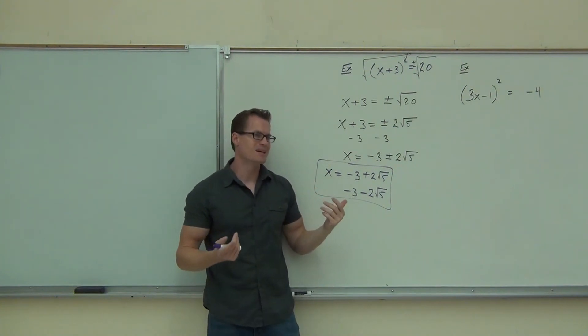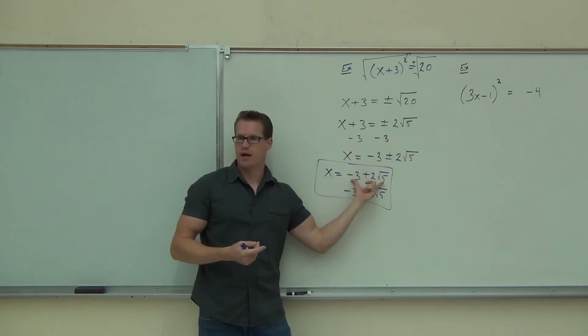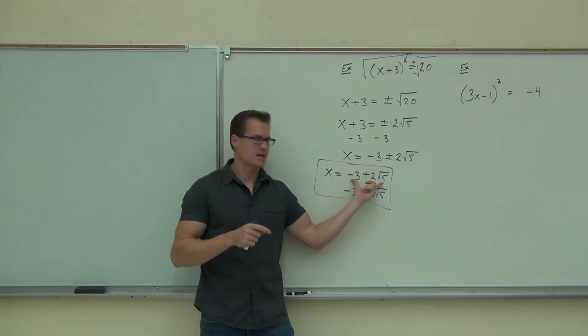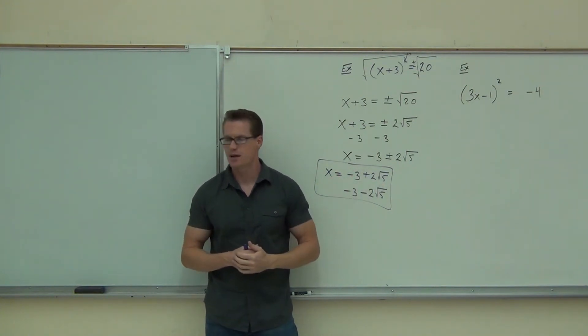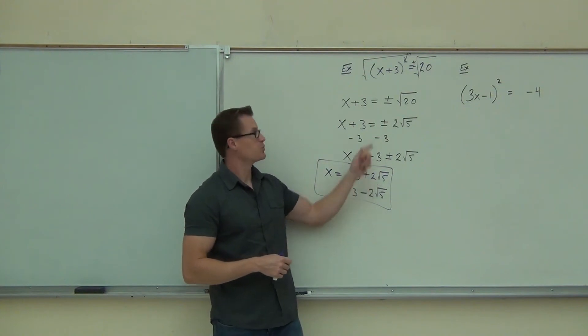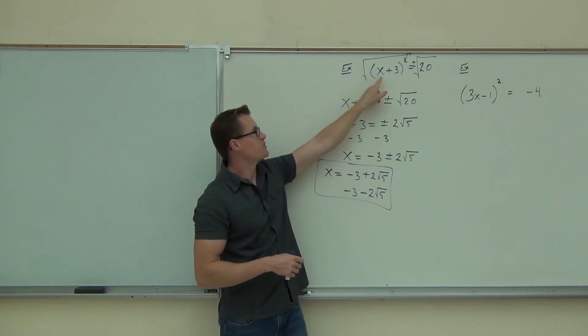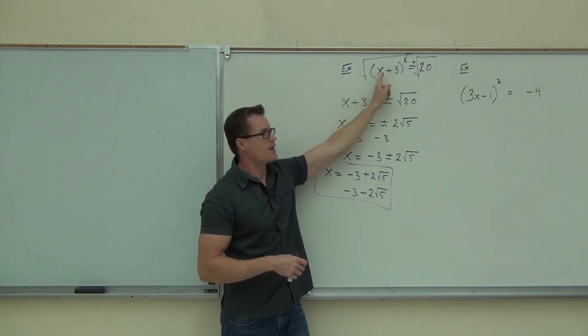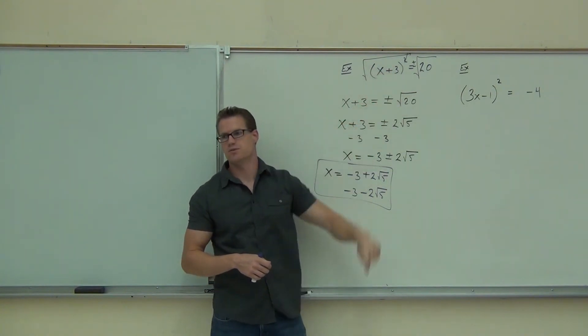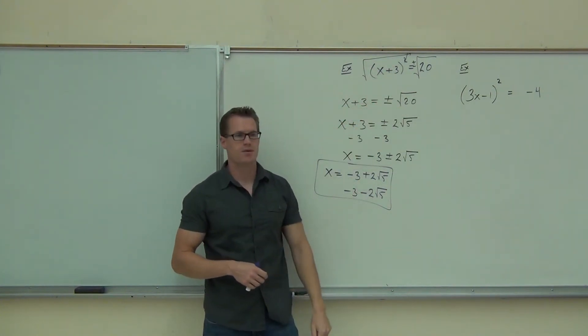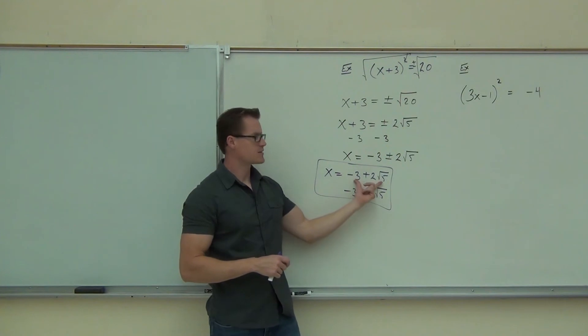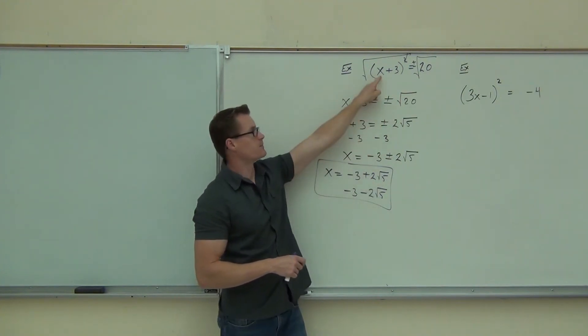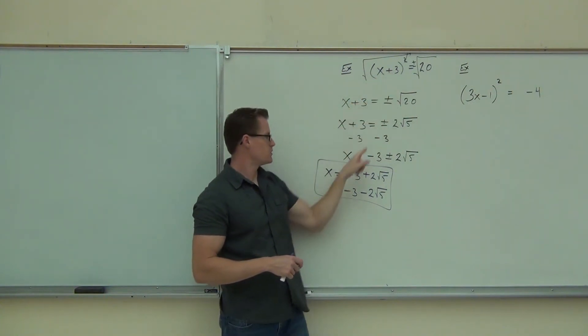Now what's amazing is that this right here, that's a number, right? There's no variable there. That's a number. If you take negative 3 plus 2 times square root of 5 in your calculator, it's going to give you some decimal that doesn't end. If you took that and you plugged it in here, so basically if you added 3 to it and then squared it, you know what? It's going to give you 20. In fact, you can probably see that right here if you really think about it. Take this expression. Follow me along here. Take this expression. Plug it in. Add 3 to it. What's it going to do?